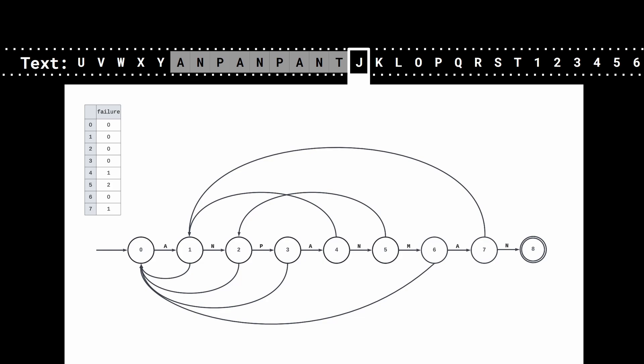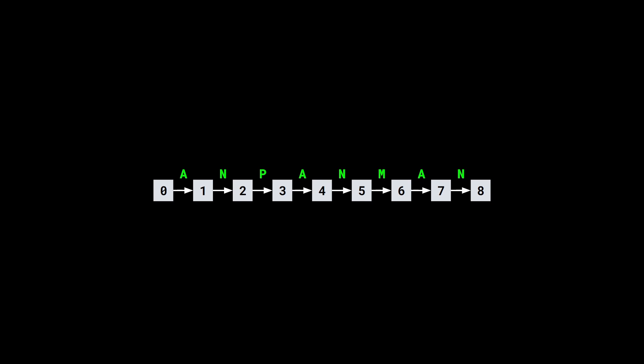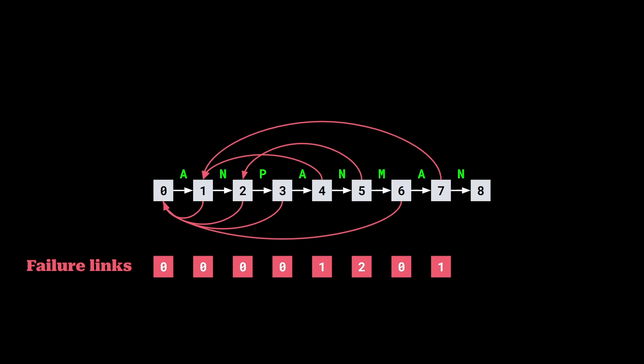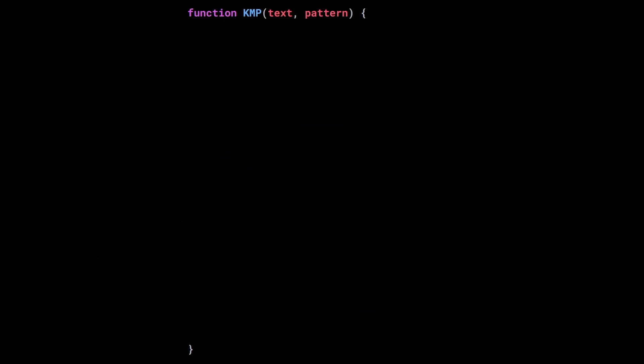Now that you have a rough idea of how it works, how can we represent this automaton? We don't really need to represent the states and transitions, because the transitions are the letters in the pattern. We just need to store the current state we are in, in a variable — let's call it Q. The letter P[Q] is the transition from Q to the state Q + 1. However, we need to represent the failure links. Because each state, except the last one, has a single failure link, we can store the failure links in an array of size M. We store for state Q the state that the failure link is pointing at.